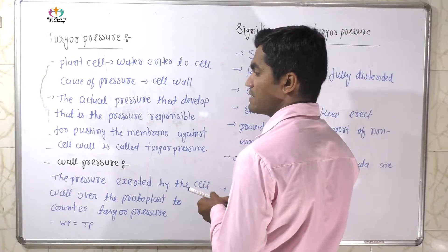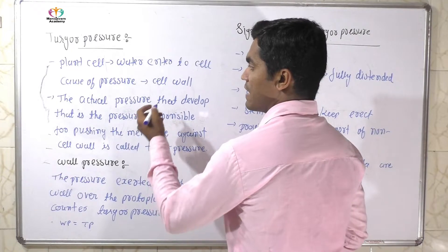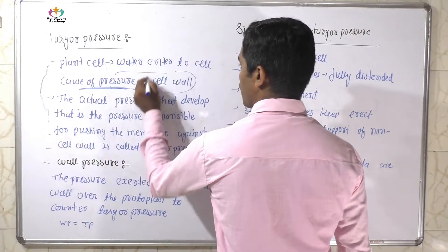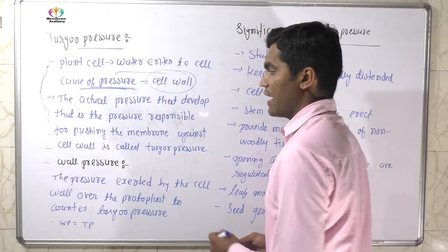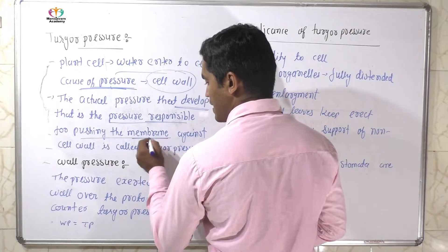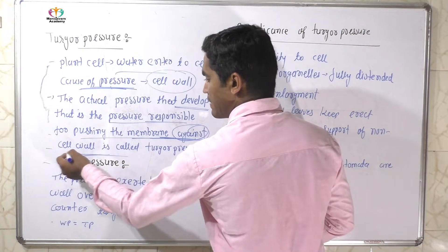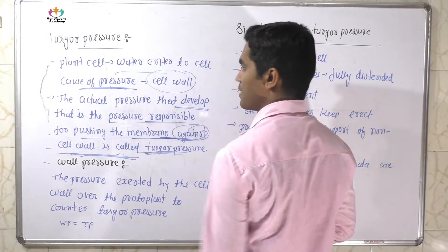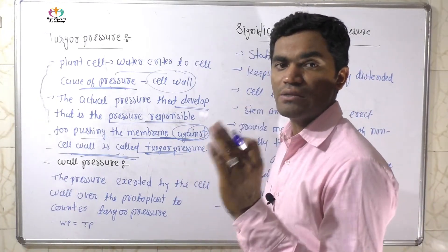The plant cell becomes swollen or turgid. The pressure increases and due to this increase, pressure is exerted on the cell wall. The cell wall gains pressure. The cytoplasmic membrane gives pressure against the cell wall, and the cell wall accepts that pressure. This is called turgor pressure.